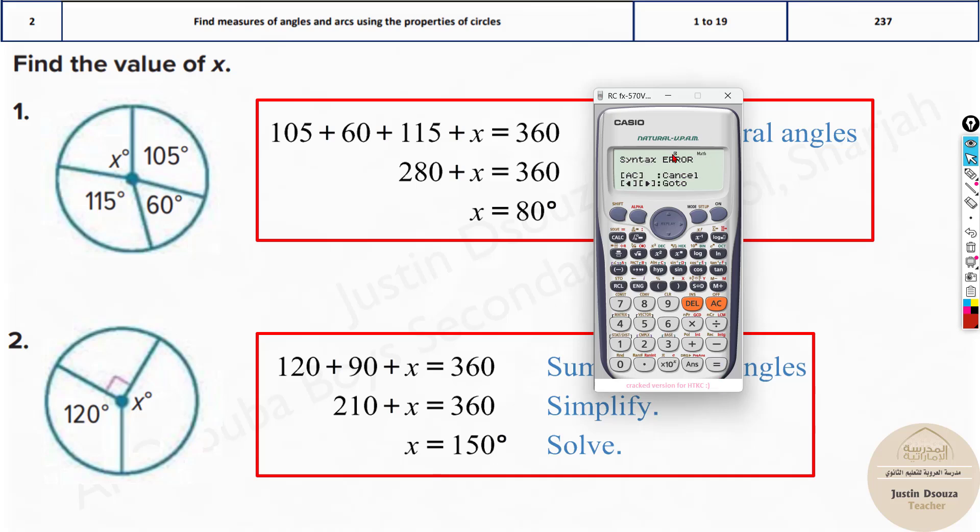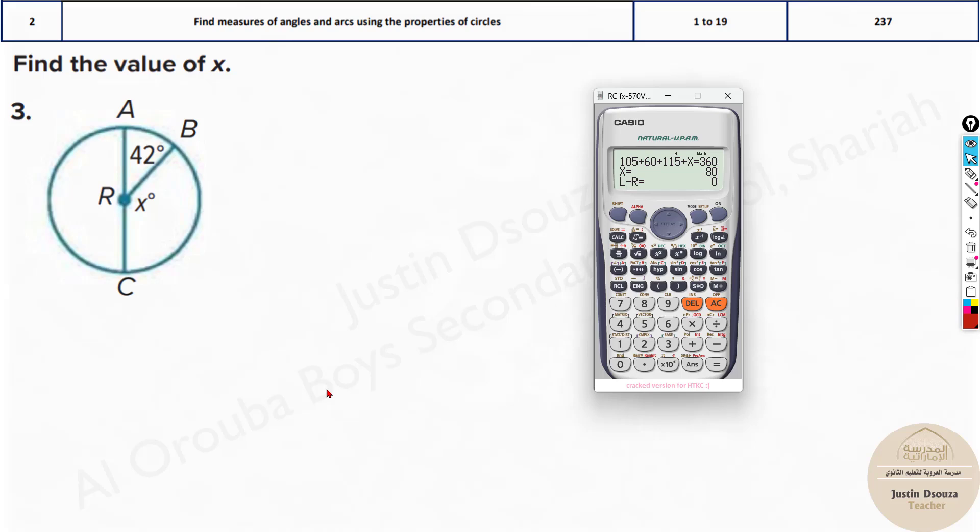Now don't press equal to, you will not get the answer because you have used equation and variable. Press shift and solve and it will solve for x, and then press equal to. You will get the answer that's 80 degrees, and similarly you can try the others.